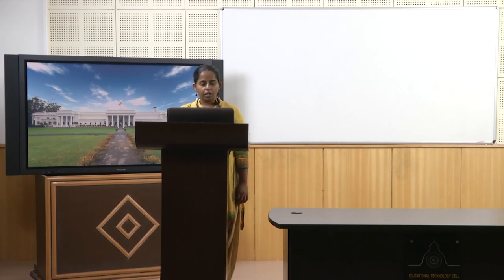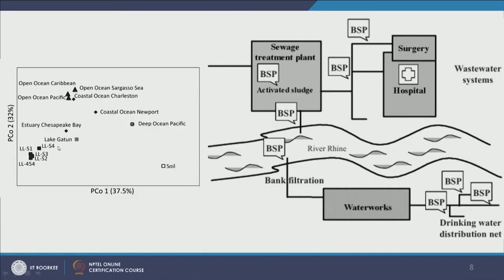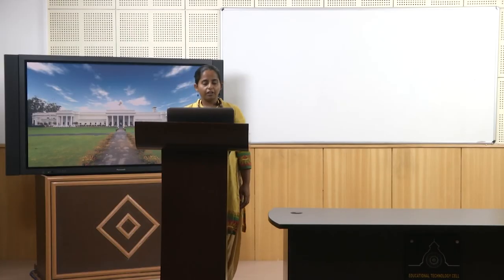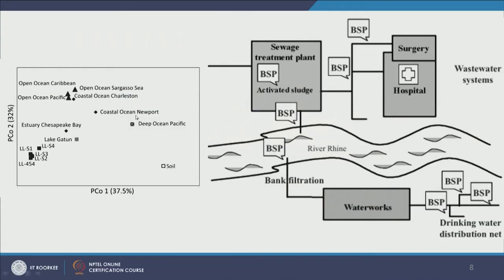Even similar environments like coastal ocean in Newport, Virginia and coastal ocean in Charleston, North Carolina can be very different from each other. We cannot generalize and say surface water bodies will have these microbes; we need to profile the microbes and avoid blanket statements about who is present in a given ecosystem.